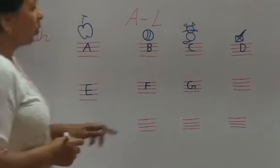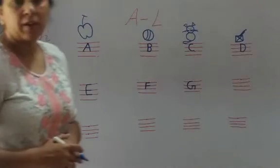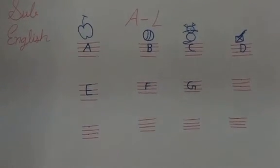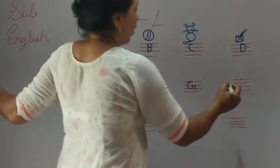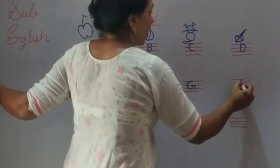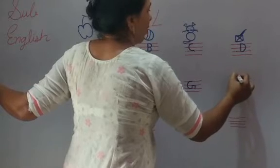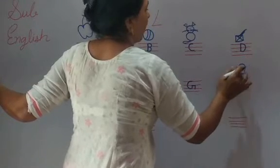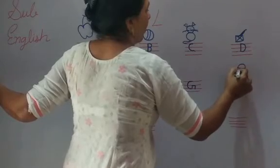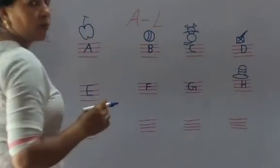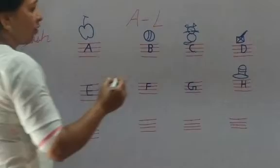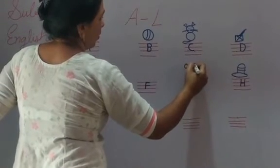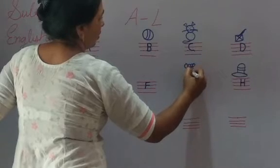Now, come to the next letter. It's H. H for hand. H for hat. Any picture. H for hat. G for grapes. We draw grapes or gun. Any picture.